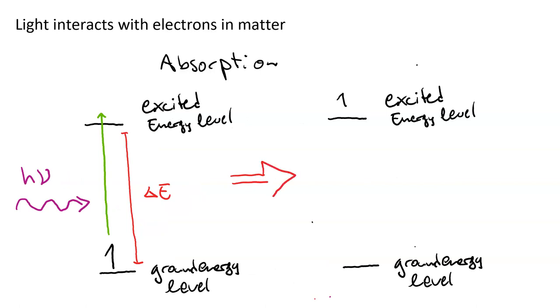This leads to, again, assuming the resonance condition where H nu equals delta E, now our electron is promoted from the ground energy level to the excited energy level.